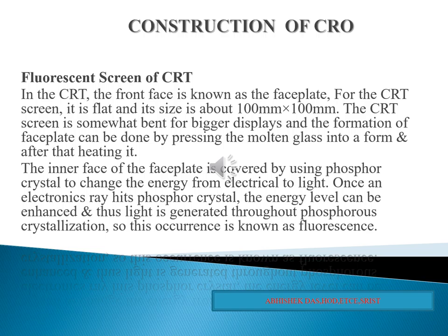The final part of the CRO is the fluorescent screen. The inner surface of the faceplate of the CRT is coated with a fluorescent material known as phosphor. The phosphor absorbs the kinetic energy of the incident electrons and re-emits the energy as visible light. Thus, a spot of light is produced at the place where the electron beam strikes the screen. The color of the light spot depends on the nature of the phosphor. A yellow-green light, for which the sensitivity of the human eye is high, is usually produced in a general purpose oscilloscope.